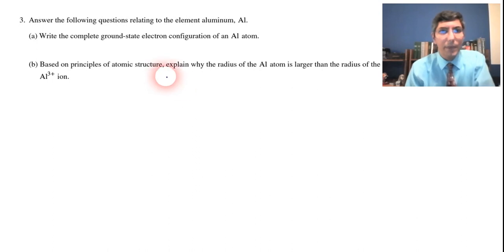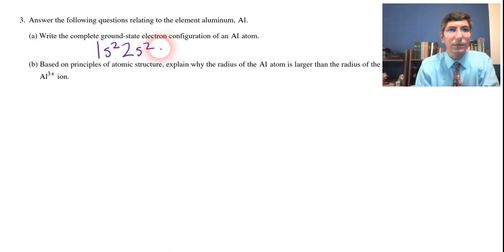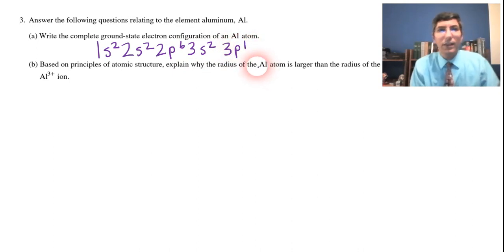So 3A, we're being asked for a ground state electron configuration of an aluminum atom. So all we have to do is look at the periodic table or whatever mnemonic aid that you use and write out the electron configuration. So it should be 1s2, 2s2, 2p6, 3s2, 3p1. And so if you write that out, that is the correct answer.